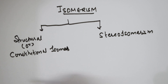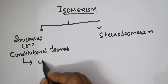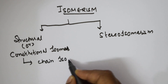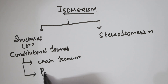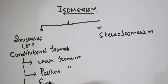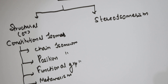Structural isomers are again divided into different types: chain isomerism, position isomerism, functional group isomerism, metamerism, tautomerism, and ring-chain isomerism. I will be teaching about all of these.